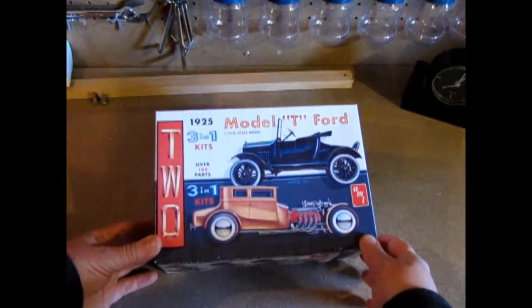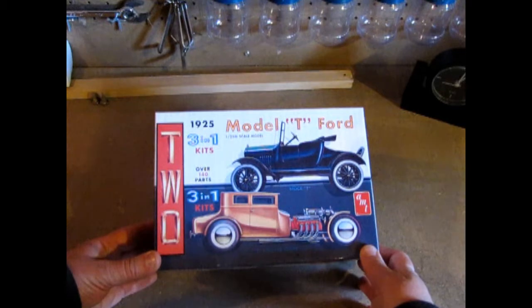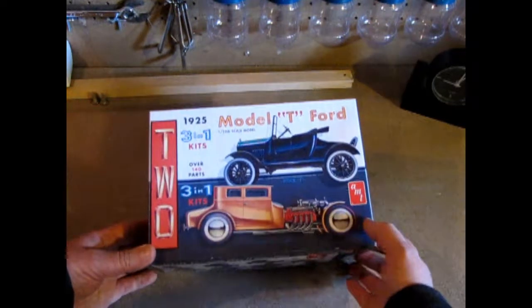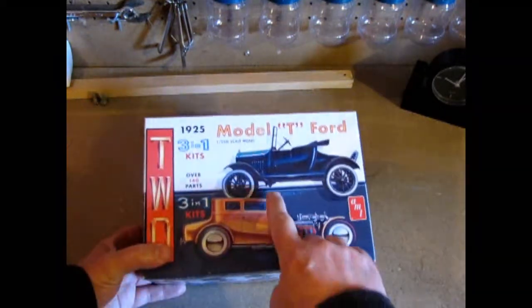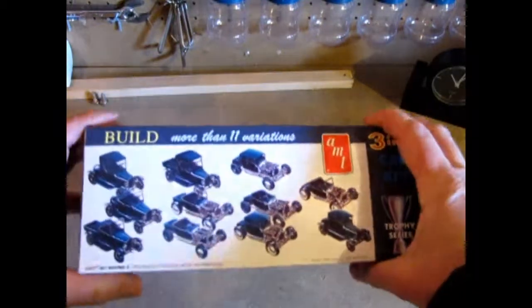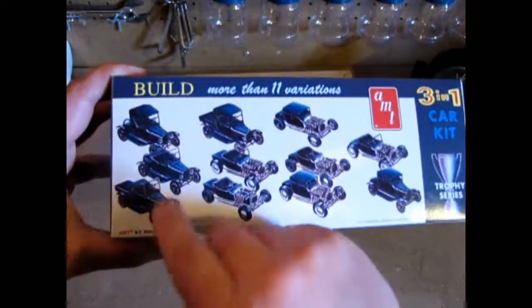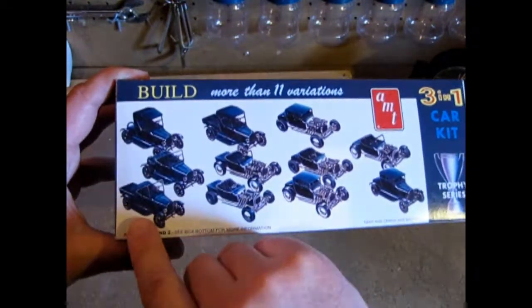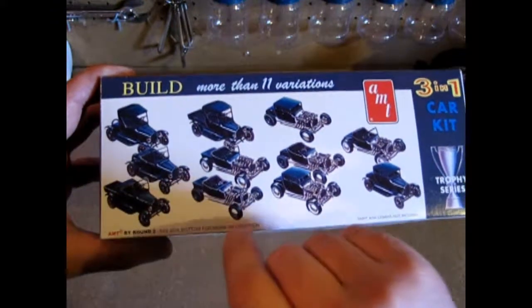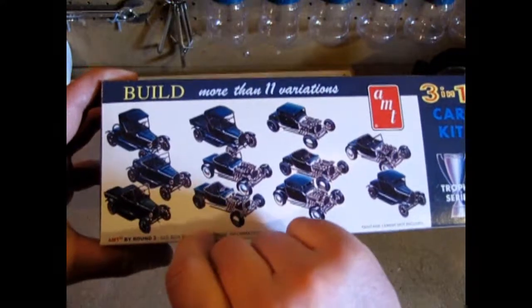And this time we have the AMT 3-in-1 1925 Ford Model T kit. Now if you've seen some of my other videos, you'll know that this is the same Model T as the Laurel and Hardy. But here they show you all these different cool options you can do. So you can do three different versions of a stock car. Actually you can do four, but it's kind of a trick.